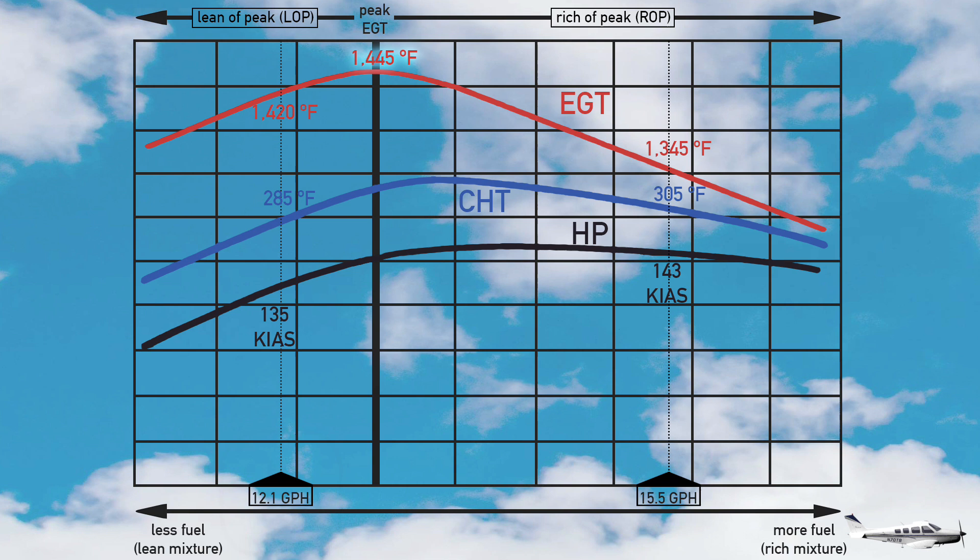Comparing these two scenarios, we are going a little slower when lean-of-peak, but we are also burning quite a bit less fuel. We will arrive at our destination a few minutes later, but with significantly more fuel left in the tanks. So for maximizing range, lean-of-peak is a great way to fly. In addition, our cylinder head temperature is lower, which as you remember means we have stronger metal and less pressure inside the cylinder, which are good things for the engine.